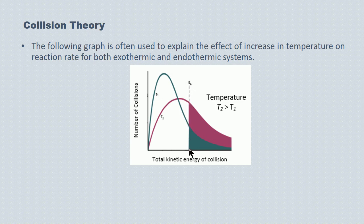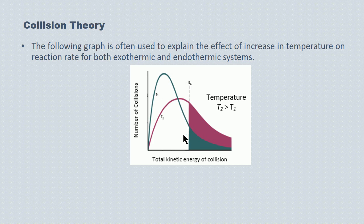All collisions to the right of this vertical line have sufficient energy to be effective collisions. The particles have to come together with the proper orientation, but if they do, they have enough energy to go through chemical change.